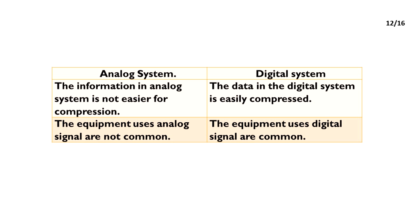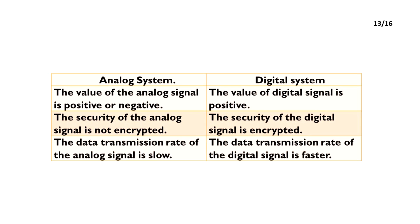The equipment that uses analog signals is not common. The equipment that uses digital signals is common. The value of the analog signal is positive or negative. The value of the digital signal is positive. The security of the analog signal is not encrypted. The security of the digital signal is encrypted. The data transmission rate of the analog signal is low. The data transmission rate of the digital signal is faster.